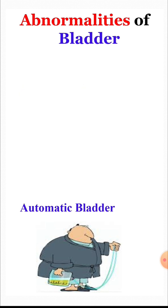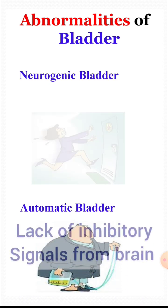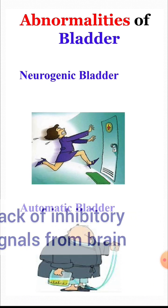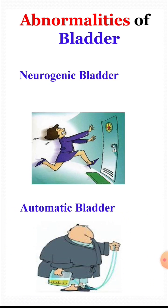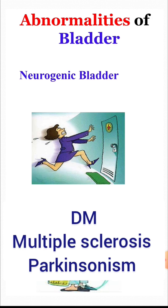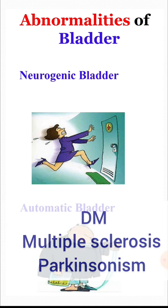The third abnormality is called neurogenic bladder and it is caused by lack of inhibitory signals from the brain. Facilitatory impulses pass continuously to the bladder, and it can occur in diabetes mellitus, multiple sclerosis, or Parkinsonism.